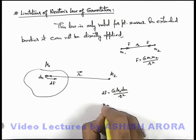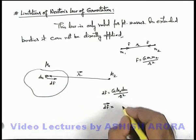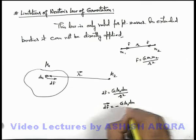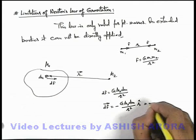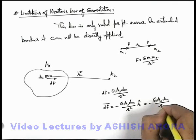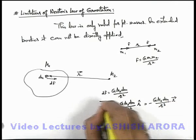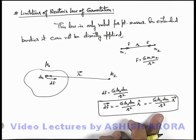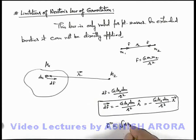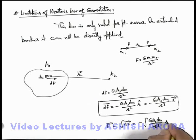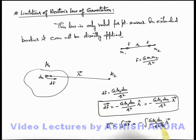And if we wish to write the vectorial value of dF: dF vector is opposite to r vector, so it can be written as −G·m₂·dm / r² · r̂, since the direction is opposite to r vector. It can be rewritten as −G·m₂·dm / r³ multiplied by r vector. This is the way how we write the vector form of Newton's law of gravitation. In this situation we can find out the total force vector, which is given by integration of dF vector, which is −∫ G·m₂·dm / r³ · r vector. This is the modified form of Newton's law of gravitation when we apply it on an extended body.